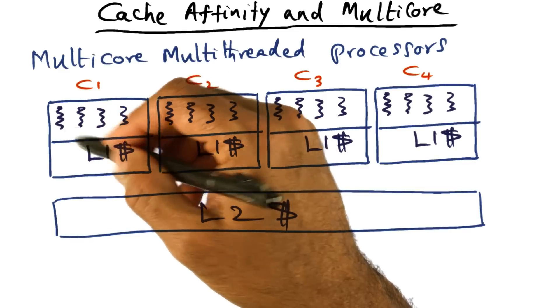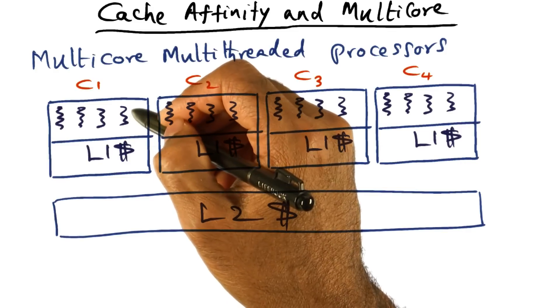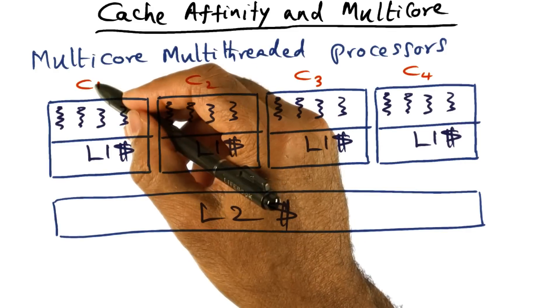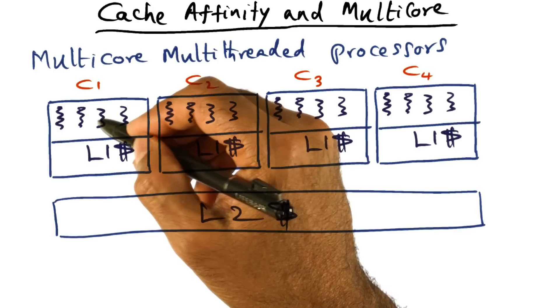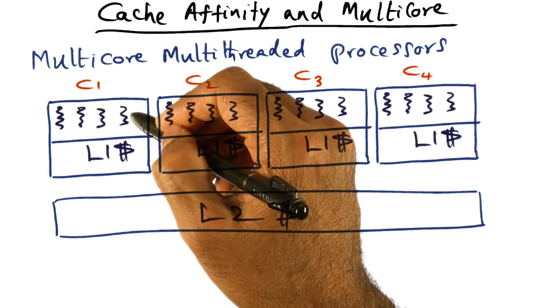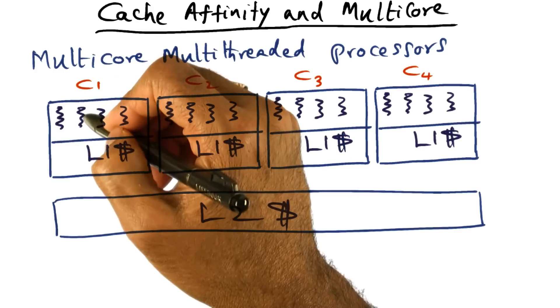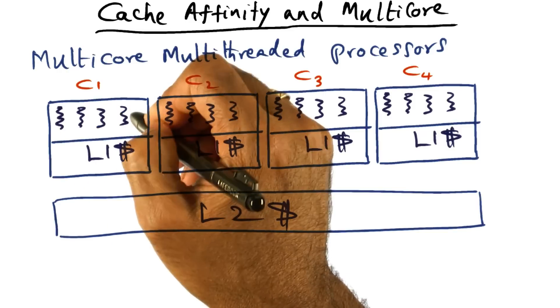It is just that these are the threads that have been scheduled to run on this core, and the hardware is switching among these threads by itself. Without the intervention of the operating system, it is automatically switching among these threads depending on what these threads are doing.